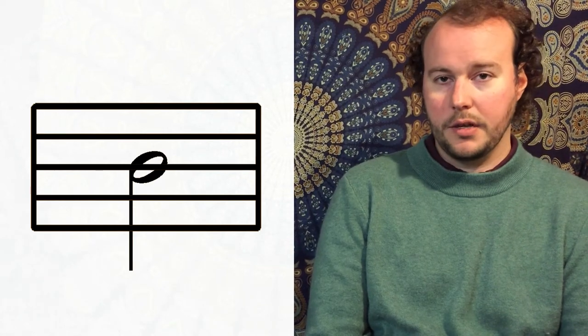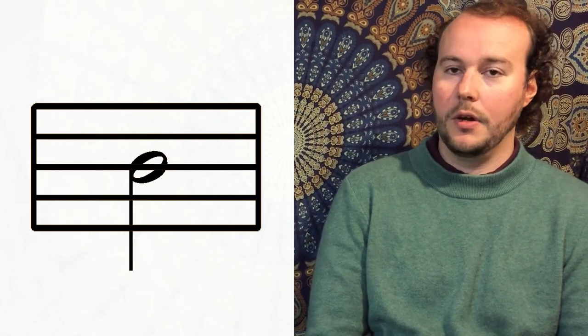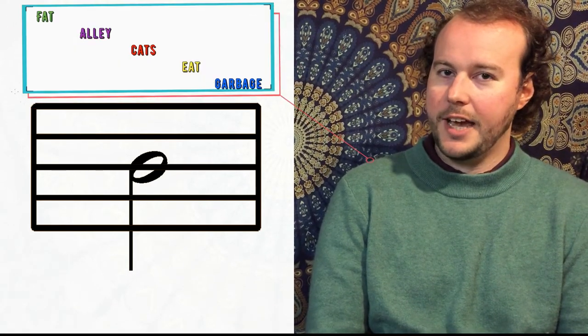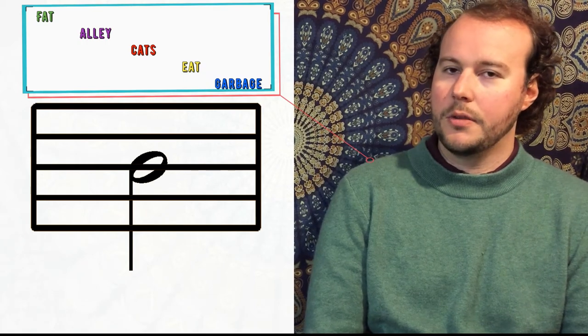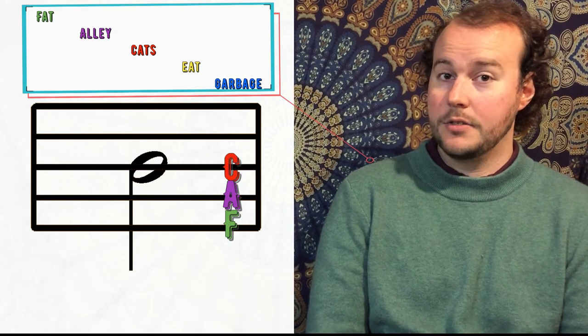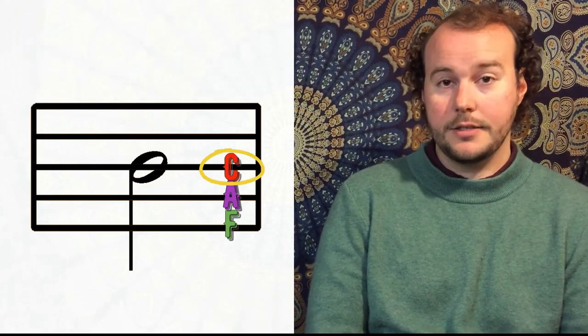Let's just have a quick little test. What would that be? So first we need to ask ourselves, is it a space or is there a line going through it? There's a line going through it. So what do we say for our lines? Remember about fat alley cats? So we're going to start at the bottom. F, A, C. So now we know that the middle line is C.